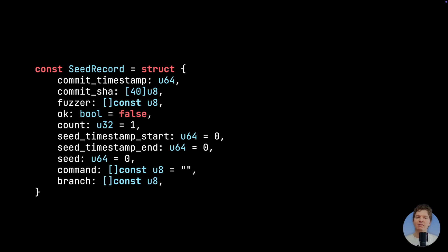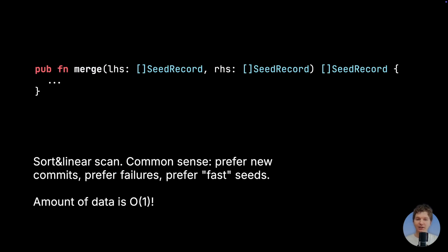Putting everything together, we get the following seed record — that's real production code. Now we can implement a natural merge operation on two lists of records, which keeps the most interesting seeds and discards redundant and obsolete ones. It can be implemented as a one-pass sort, merge, and deduplicate algorithm, like the one in LSM compaction. Here are the rules for merging: keep only the latest commit timestamps; for each commit–fuzzer pair, keep at most M seeds; prefer failures to successes; prefer fast failures; and merge successes by adding their counts together.